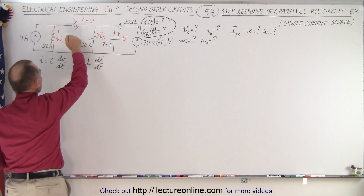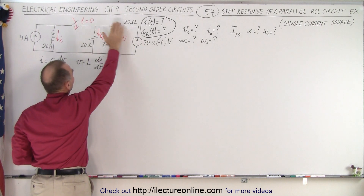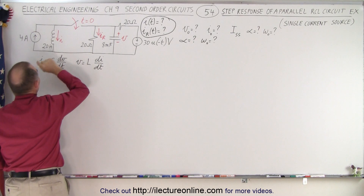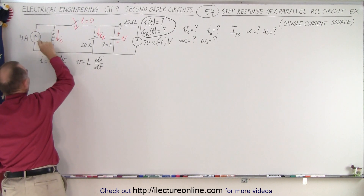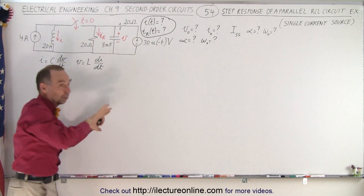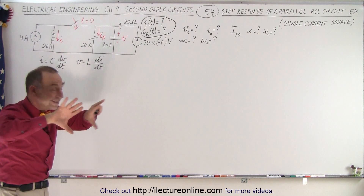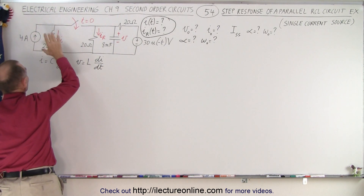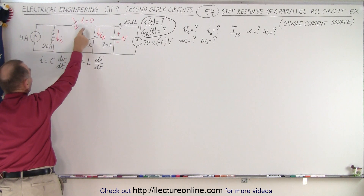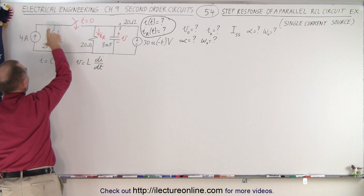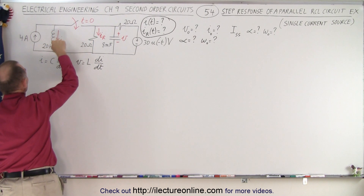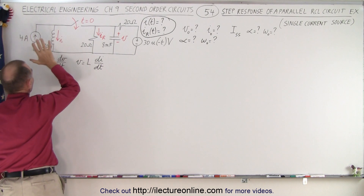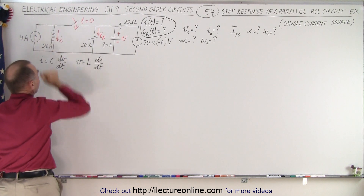Before the switch closes, we have a voltage applied to this part of the circuit but not to the other part. We have current flow to this part of the circuit but not through that part — they're really separated from one another. There's a steady state situation before time equals zero, so there's no voltage drop across the inductor.